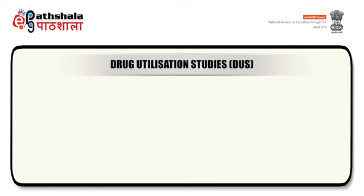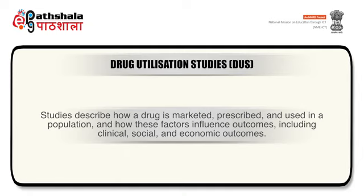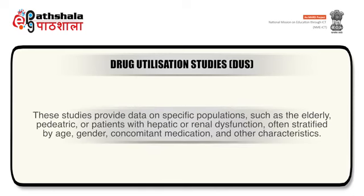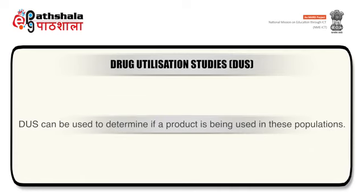Drug utilization studies describe how a drug is marketed, prescribed and used in a population, and how these factors influence outcomes including clinical, economic and social outcomes. These studies provide data on specific populations such as geriatric, pediatric, or patients with hepatic or renal dysfunction, and are often stratified by age, gender, concomitant medication and other characteristics. These studies can be used to determine if a product is being used in these populations.